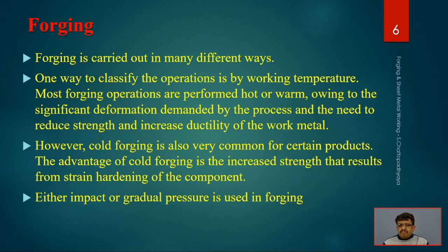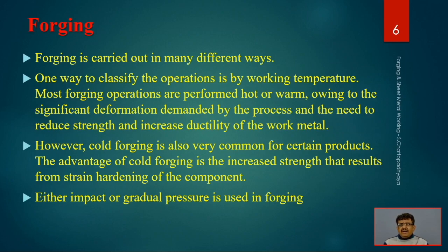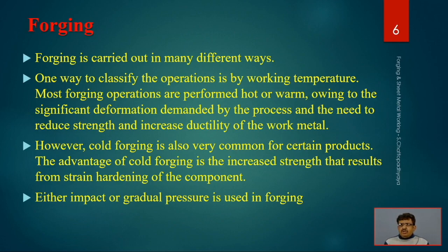Forging is carried out in many different ways. One way to classify the operations is by working temperature - hot forging and cold forging. Most operations are performed in hot or warm conditions. Why hot? Because the yield strength will be less, so less force is required on those components. With a smaller machine we can produce them. If done at room temperature, the problem is that a lot of force is needed and the machine has to be very large, and sometimes cracks form beyond the plastic region.